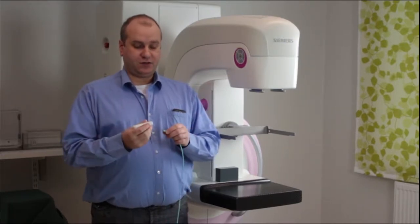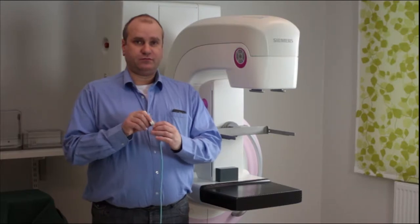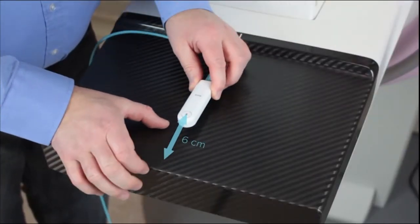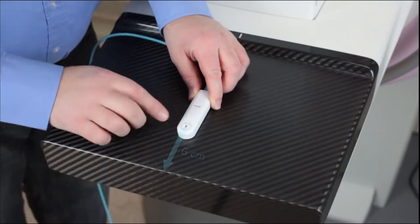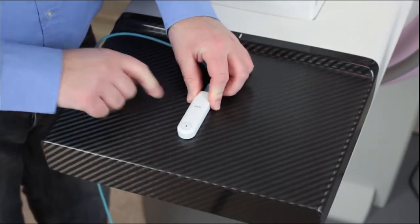First connect the USB cable. Place the sensor 6 centimeters from the chest wall side or according to local regulations.